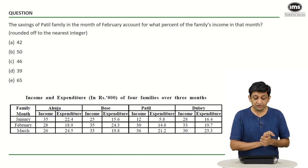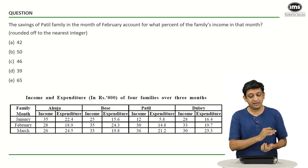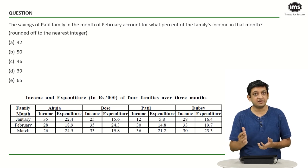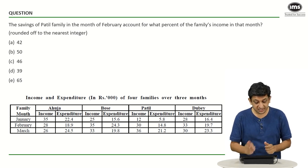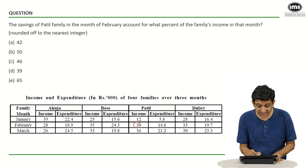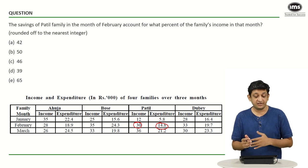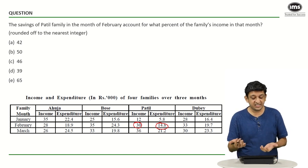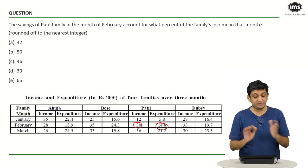In this question, we have to figure out the savings of the Patil family in the month of February as a percentage of the family's income in that month. So, you have to figure out savings upon income in the form of a percentage. If you look at the Patil family for the month of February, their income is 30 and their expenditure is 14.8. If the income is 30 and the expenditure is 14.8, the remaining part has to be savings.